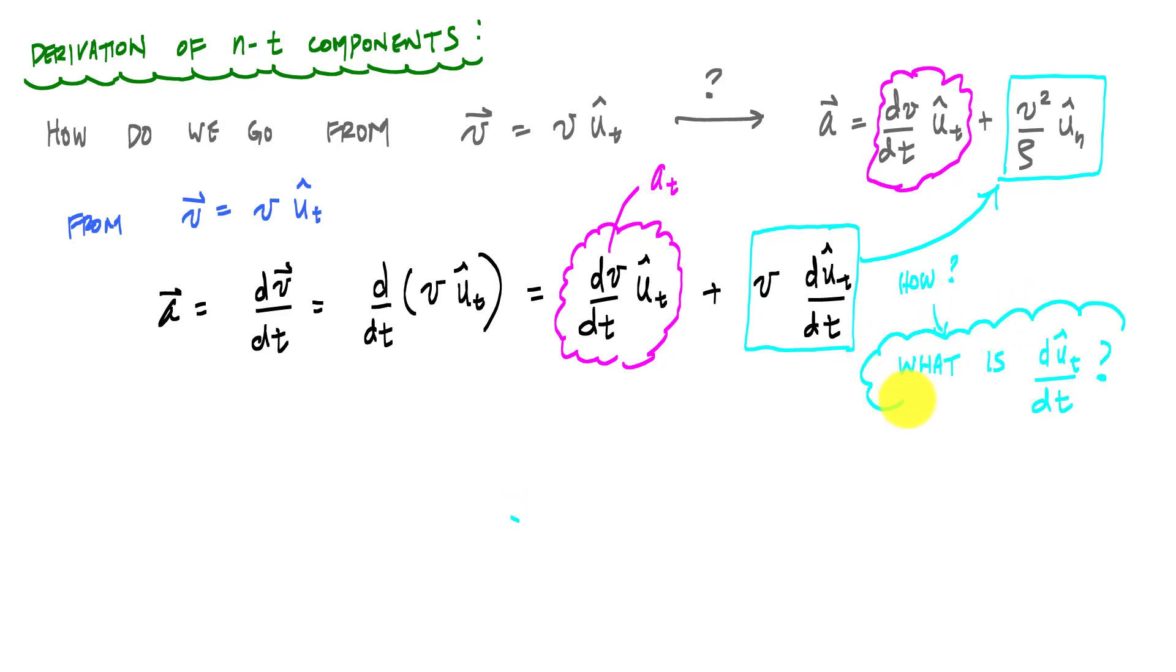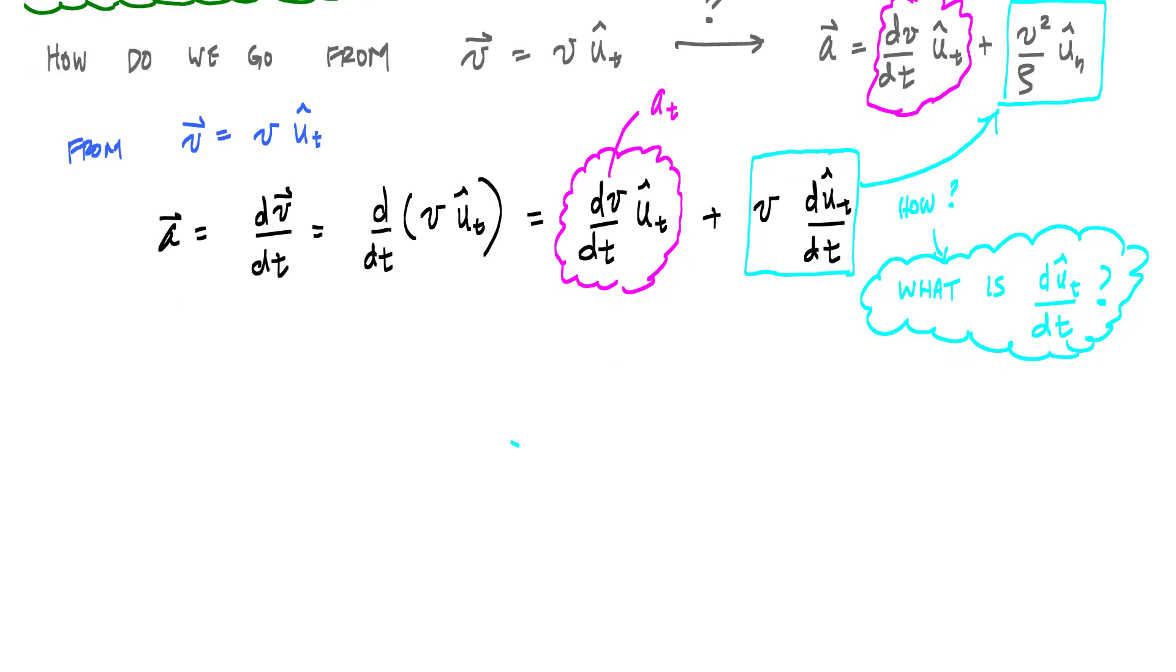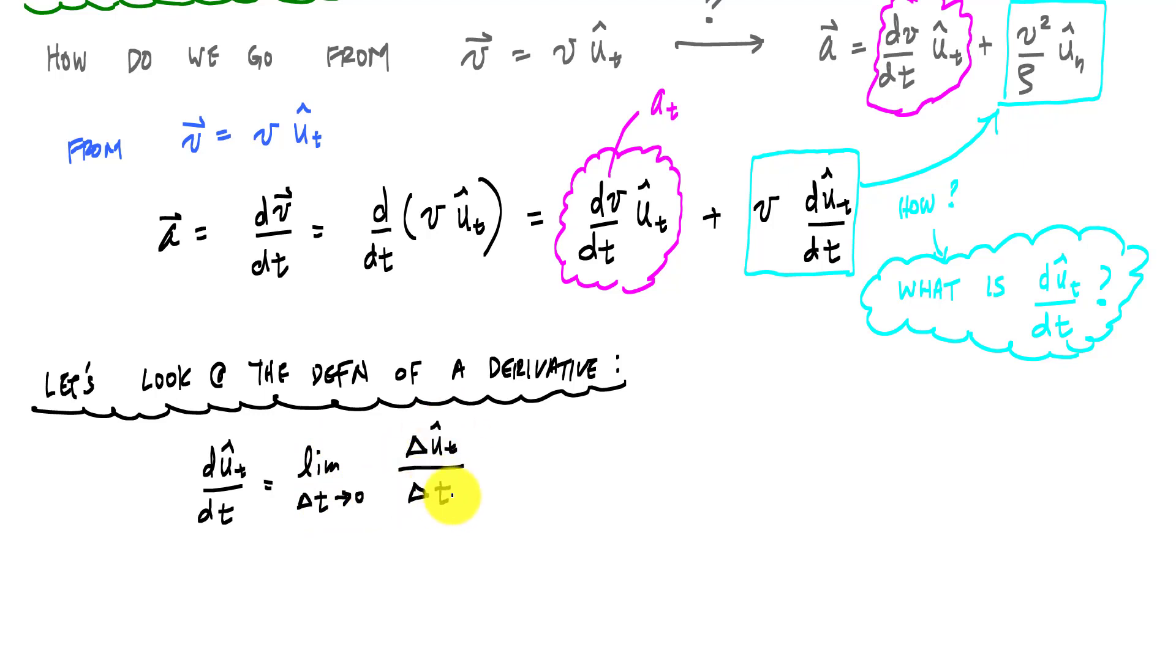This is the focused question that we have to answer to really make this happen, to understand what's happening here and why we get this v squared over rho in the u_n hat direction. And so what is d(u_t)/dt? In order to answer this question, let's look at the definition of the derivative. And in particular, this d(u_t hat)/dt, in terms of the definition of derivative, would be the limit as delta t goes to zero of delta u_t hat over delta t like this.